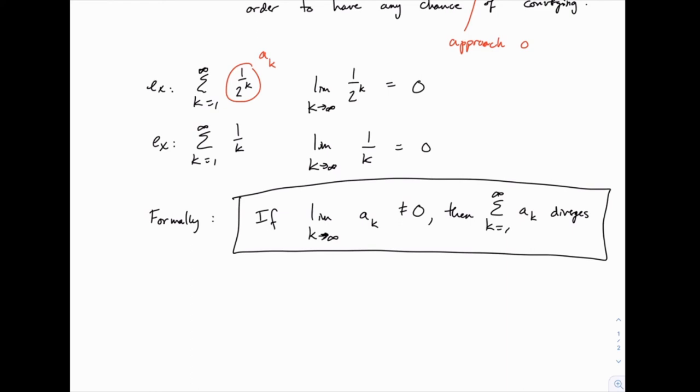The example I gave above of the series 2 plus 2 plus 2 plus 2, that limit of 2 as k goes to infinity is 2 or not 0. So that one clearly diverges according to the divergence test.